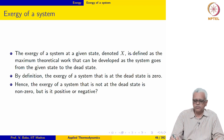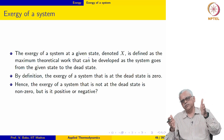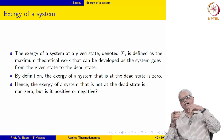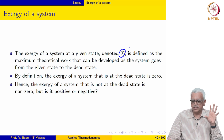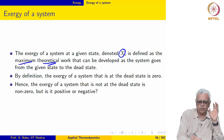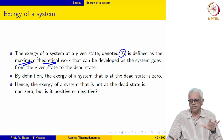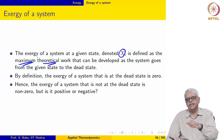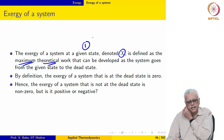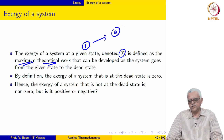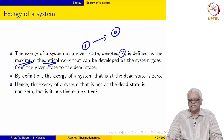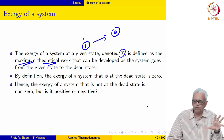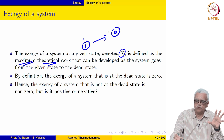The exergy of a system at a given state is defined as the maximum theoretical work that can be developed as the system goes from the given state to the dead state. So if you label this state as 1, then as the system goes from state 1 to the dead state, denoted state 0, the maximum work that can be developed during this process is called the exergy of the system at that state. It follows clearly that the exergy of the system at the dead state is 0, because no work can be developed from a system at the dead state.